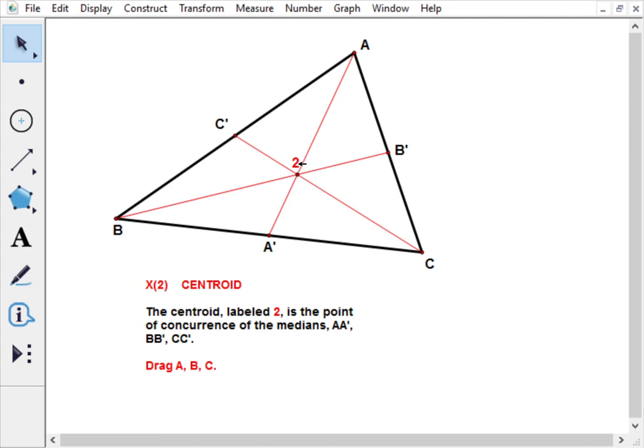This is also the point of balance of the triangle in two different ways. If you cut out a triangle of this shape with a uniform mass distribution, maybe out of plywood with equal thickness all the way around,